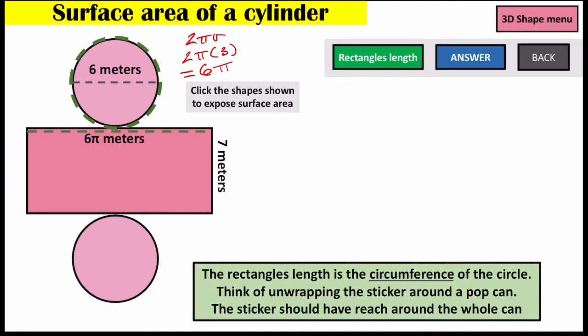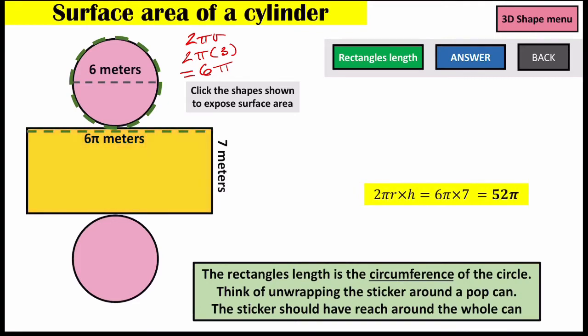Now we have our rectangle's length. We have its height, so we can find its area which is base times height — that's 2πr times height. So 6π times 7 gives us 42π for the rectangle's area.